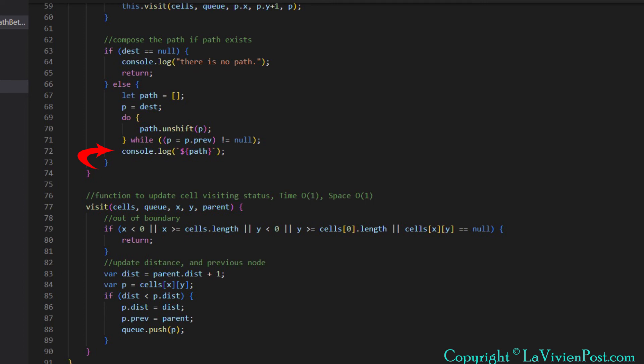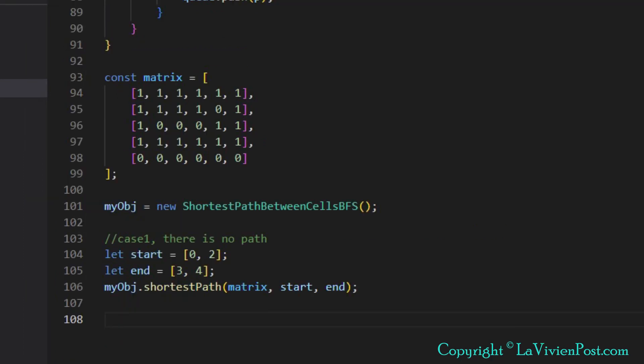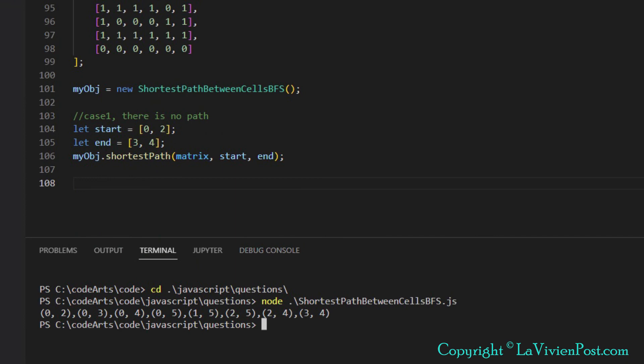In the main function, we have a matrix defined like this. We are going to run three cases. The first one is from upper left to lower right. The start cell is 0,2. The end cell is 3,4. When we run BFS, we get the path from start cell to end cell.